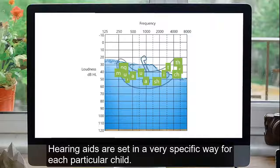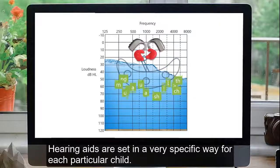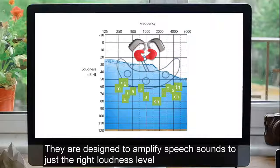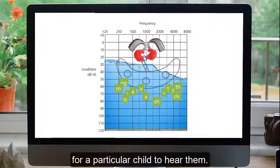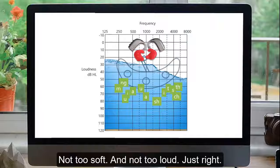Hearing aids are set in a very specific way for each particular child. They are designed to amplify speech sounds to just the right loudness level for a particular child to hear them. Not too soft, and not too loud, just right.